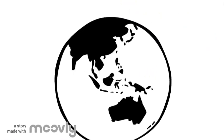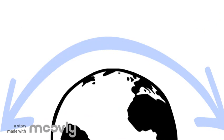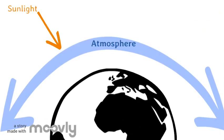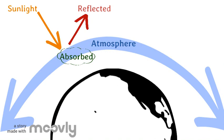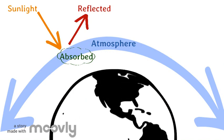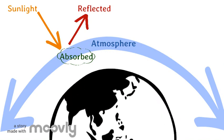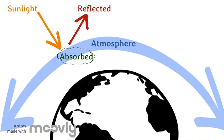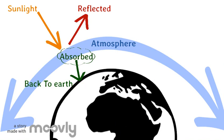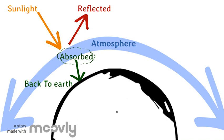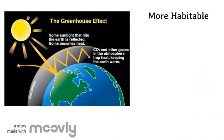Earth warms in a similar way. Sunlight penetrates the gas layer of the atmosphere, which is partly absorbed and partly reflected. Small particles in the air ensure that a percentage of the reflected radiation is sent back to Earth. The absorbed energy warms the atmosphere and the surface of the Earth, making our planet more habitable.